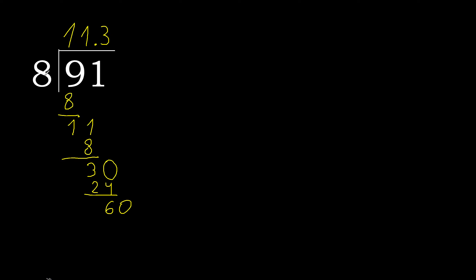Bring down 0, making 60. 8 multiplied by 7 is 56. Subtract, complete. Remainder is 4.